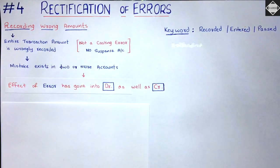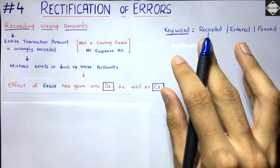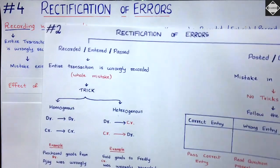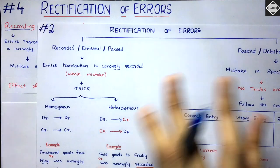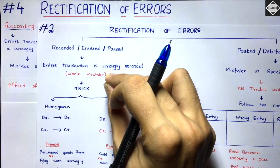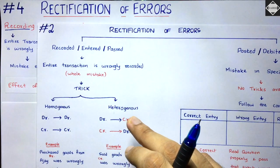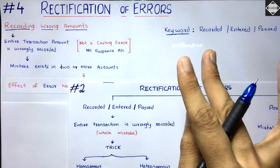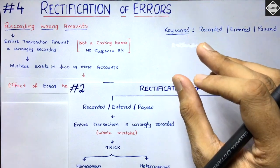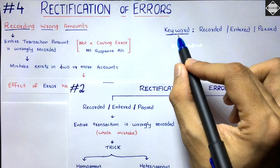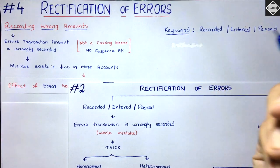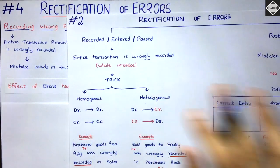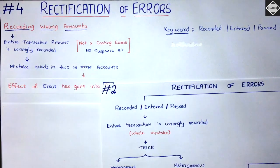To identify these errors, look at the keywords in the question. If it says 'recorded,' 'entered,' or 'passed,' that means the entire transaction is wrongly recorded. We have seen this classification in the second video. Check whether the error is homogeneous or heterogeneous — if not, then look for wrong amounts. For example: 'rent paid five thousand has been recorded as ten thousand.' Once you see those keywords, you know the effect has gone into both debit and credit.